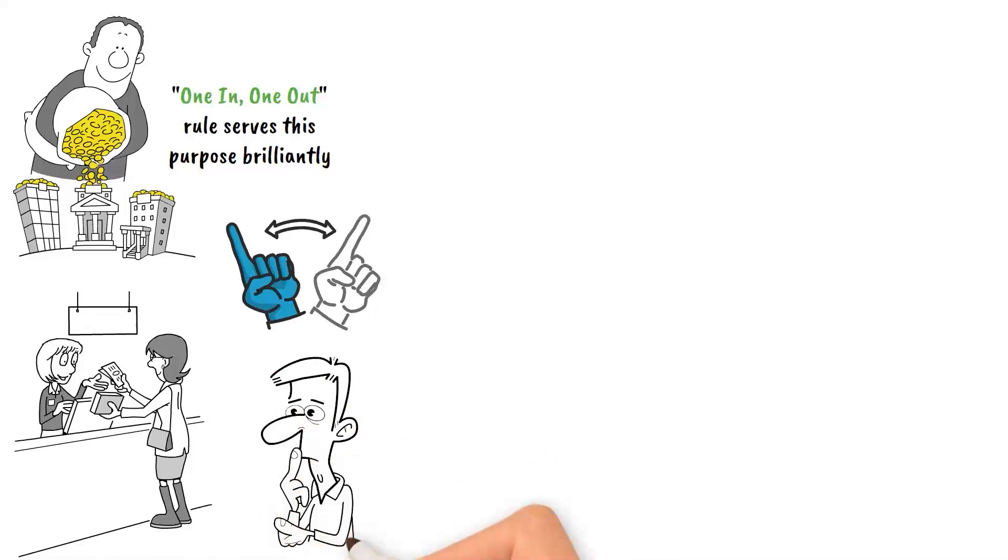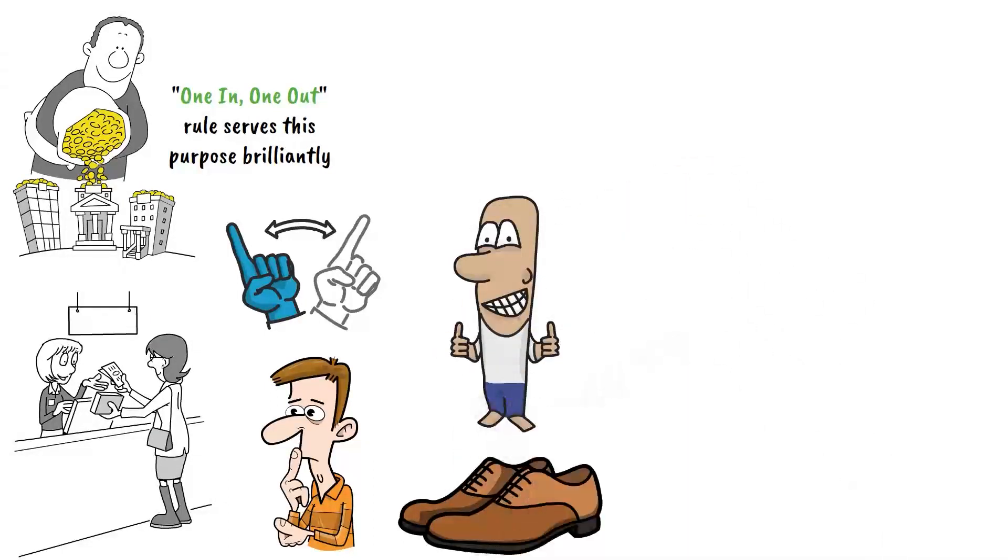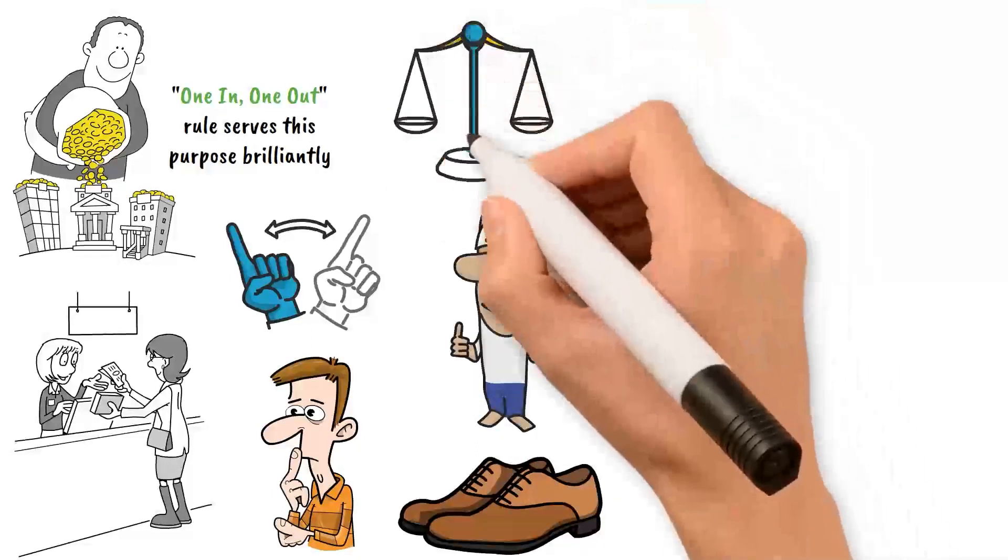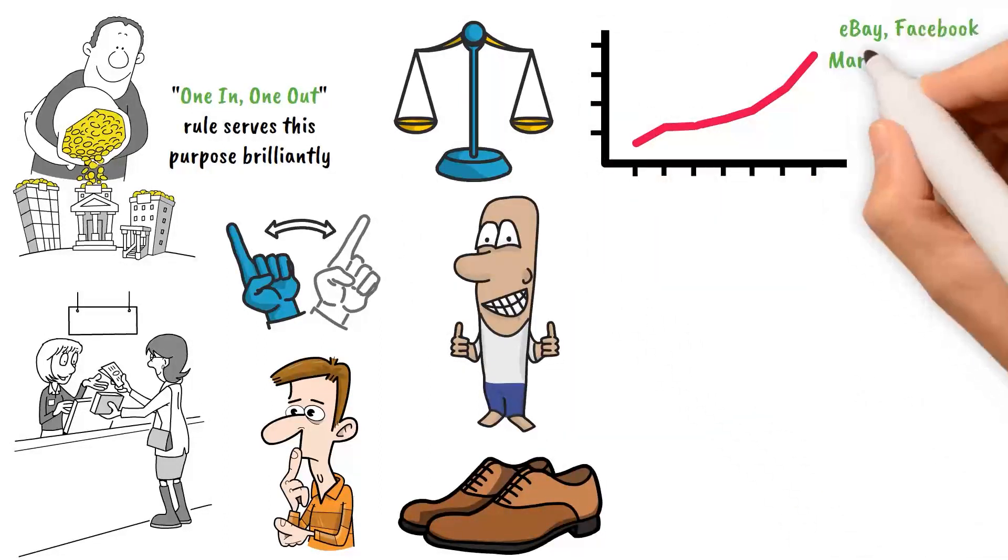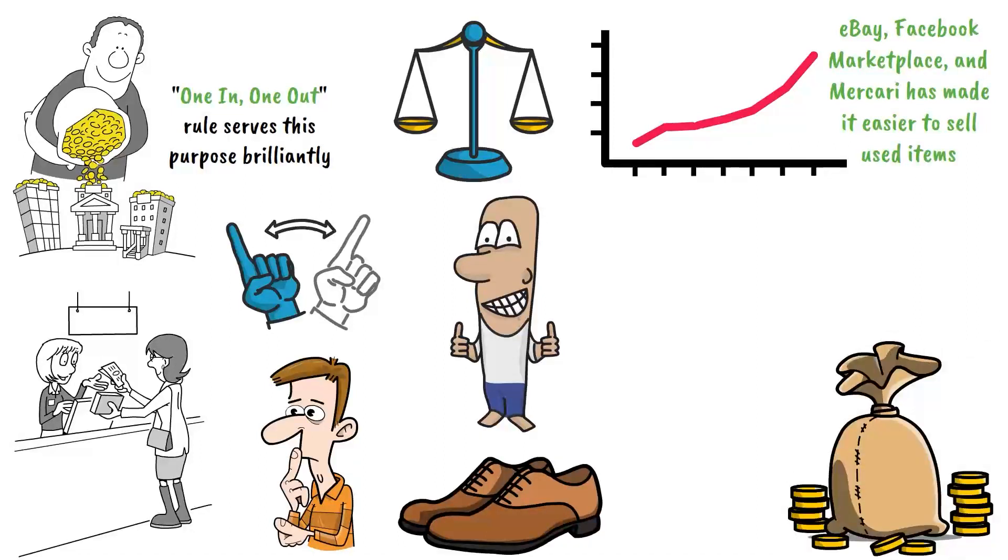Implementing this rule requires discipline and thoughtfulness. If you purchase a new pair of shoes, you may donate, sell, or trash an old pair that you no longer wear. This not only prevents clutter, but it also ensures that your items are used and do not wind up in landfills. In recent years, the rise of online marketplaces like eBay, Facebook Marketplace, and Mercari has made it easier to sell used items, and charities are always accepting donations. Not only does this earn you back some money, but it also promotes a more circular economy by prolonging the lifespan of items.